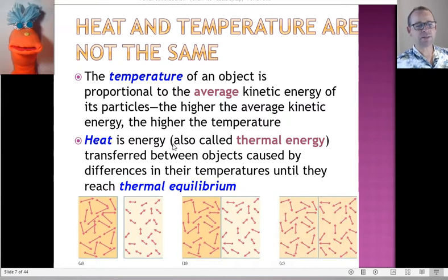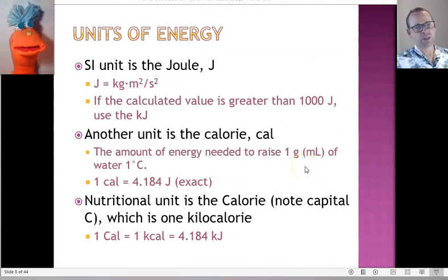So, temperature is the average kinetic energy of whatever the molecules are in that system. Heat is the transfer of this energy. Like we showed previously, we can transfer that heat when groups of molecules come in contact with each other. Now, the units of energy that we'll deal with in chemistry class are joules. And we often speak of them in terms of kilojoules, thousands of joules.